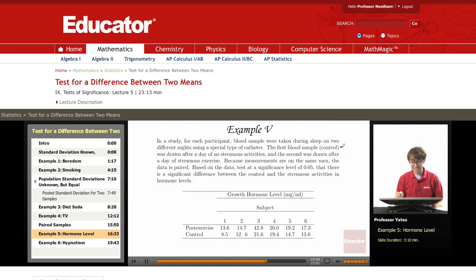Based on the data, test at a significance level of 0.05 that there is a significant difference between the control and the strenuous activities in hormone levels.